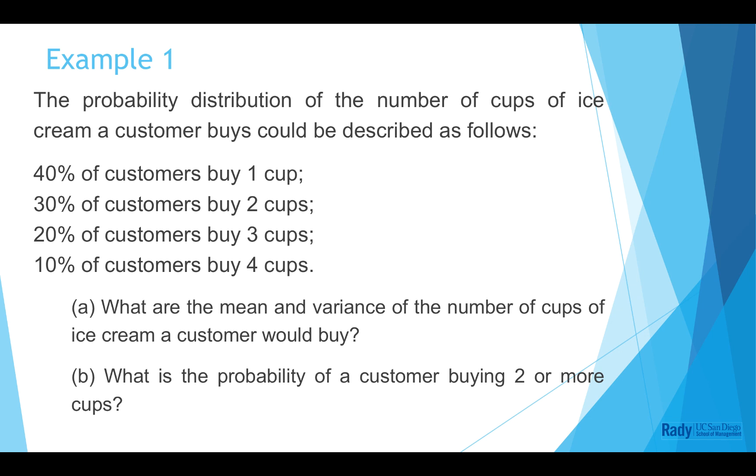Question A is to calculate the mean and variance of the number of cups of ice cream a customer would buy. Question B is what is the probability of a customer buying 2 or more cups?